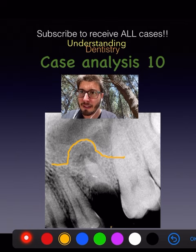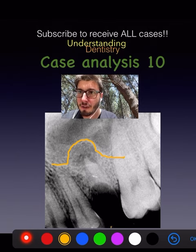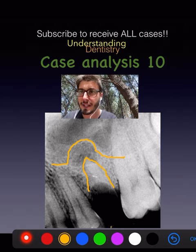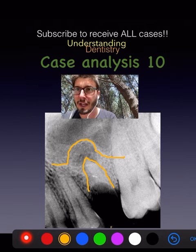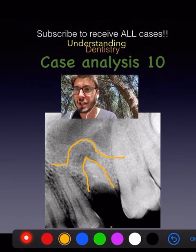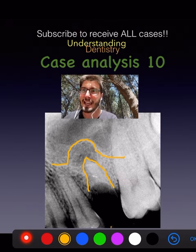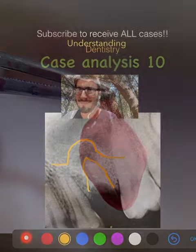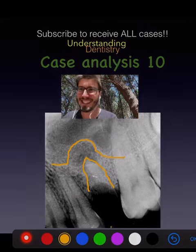The treatment would be the extraction of this retained root. We have a nice periodontal ligament space here, which is reasonably widened. We can extract and try to enucleate. I just performed this enucleation procedure, and this is actually the enucleated radicular cyst. See you guys in the next videos.